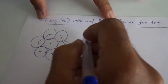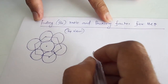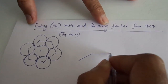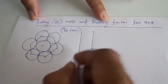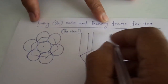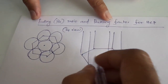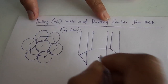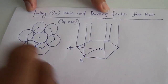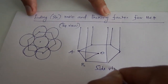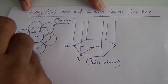Considering the same structure in a side view — this is the top view of the atoms and the side view may be drawn accordingly. The side view bottom surface is formed here. The central atom is labeled O, and the surrounding atoms are A and B.